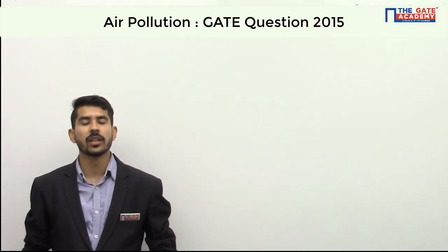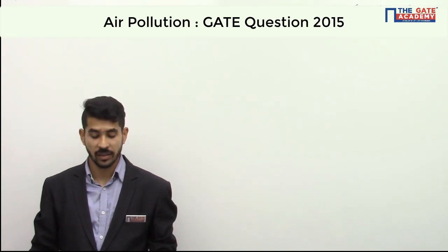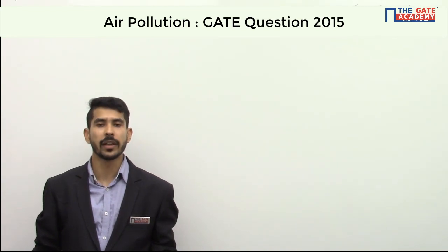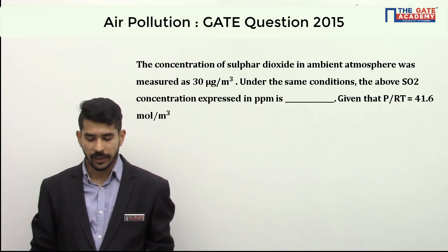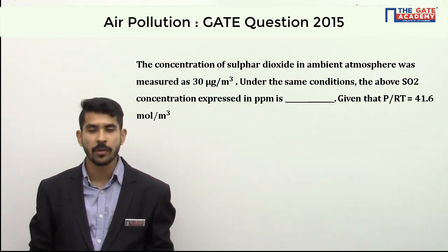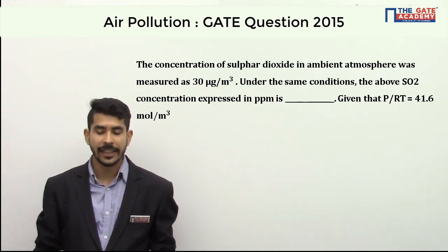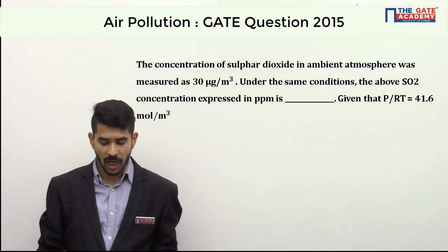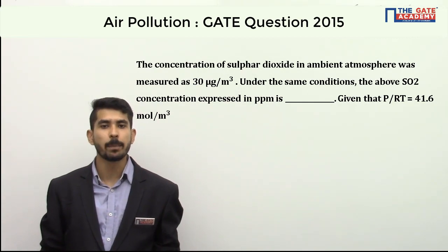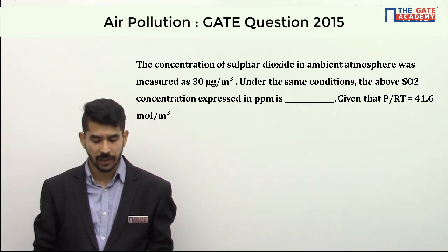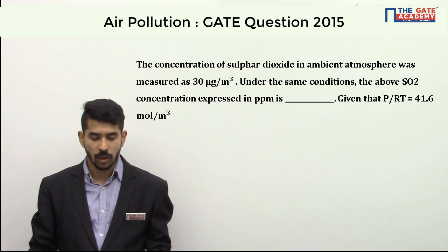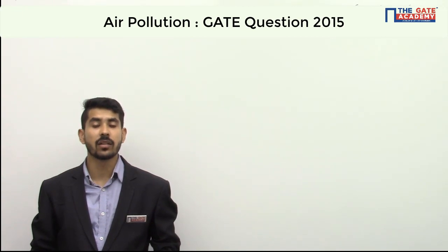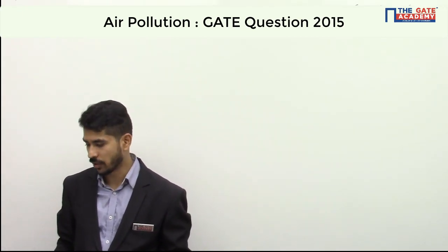Hello friends, today I will be discussing a question asked in GATE 2015 from environmental engineering, from the topic air pollution. The question says: the concentration of sulfur dioxide in ambient atmosphere was measured as 30 micrograms per meter cube. Under the same conditions, the SO₂ concentration expressed in PPM is dash, given that P/RT equals 41.6 moles per meter cube. So he is asking us the concentration of SO₂ in PPM.